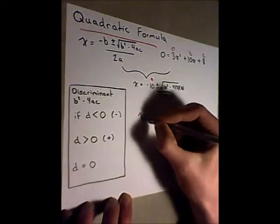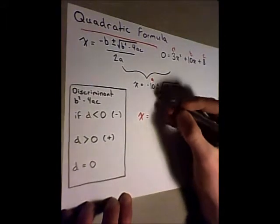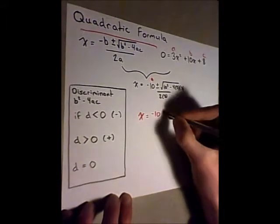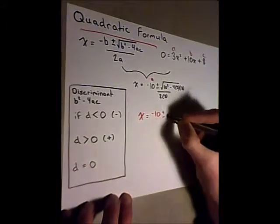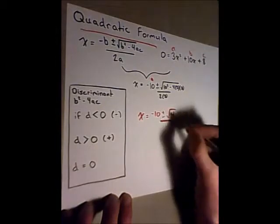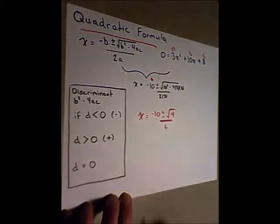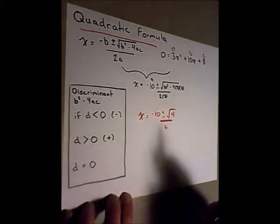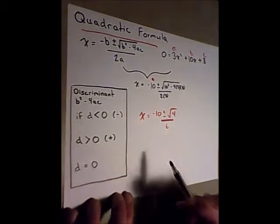I'll simplify this, and I end up with x is equal to negative 10 plus or minus the square root of 4 over 6. This is okay to write it, but to find the specific roots, we might as well plug it in.